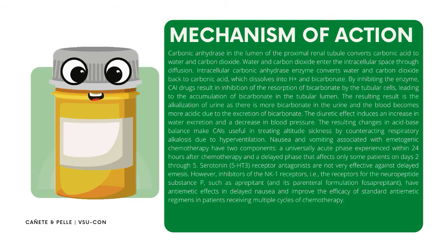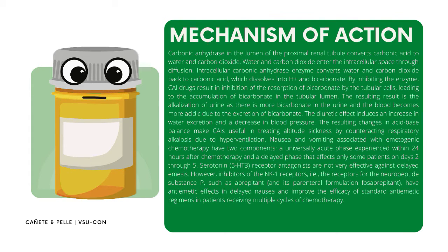Mechanism of Action: Carbonic anhydrase in the lumen of the proximal renal tubule converts carbonic acid to water and carbon dioxide. Water and carbon dioxide enter the intracellular space through diffusion. Intracellular carbonic anhydrase enzymes convert water and carbon dioxide back to carbonic acid, which dissolves into hydrogen and bicarbonate. By inhibiting the enzyme, carbonic anhydrase inhibitor drugs result in inhibition of the resorption of bicarbonate by the tubular cells.